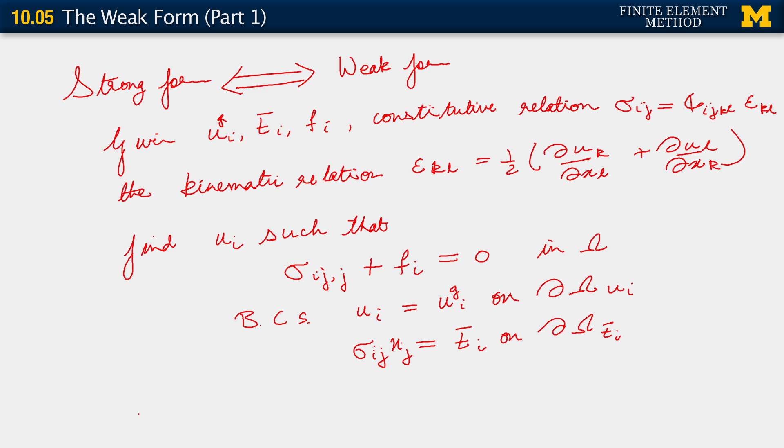We start out from here and now we introduce, as we did before, the weighting function. So what we start off by saying is now let us consider w_i belonging to V, which has the usual property, which is that V consists of all w_i such that w_i vanishes on that Dirichlet boundary. What we will do now, and this is something you may recall from our previous repeated developments of the weak form, actually think about it, what do we do? How do we proceed now?